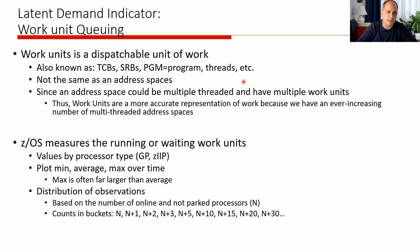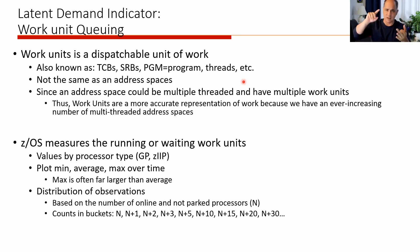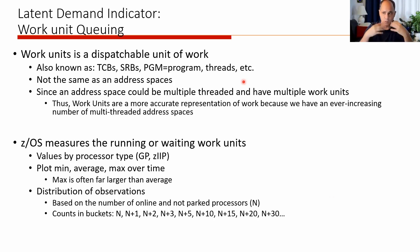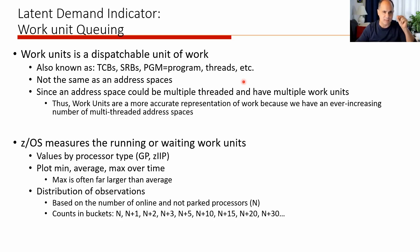Another thing that we look at for latent demand, or to actually measure the amount of latent demand, is looking at the work units being dispatched. You have some number of logical processors and you have things that want to use the CPU — we call these work units. Examples of work units are TCBs and SRBs, which are basically your batch job, your DB2 threads, or whatever. They basically boil down to TCBs and SRBs, and they want to be dispatched. What we're interested in is looking at the number of units of work waiting to use the CPU — those are work unit queuing. We want to understand that if we have latent demand and know work is queuing up waiting to use those CPUs, how backed up is that queue?